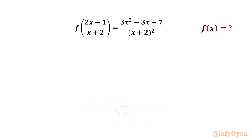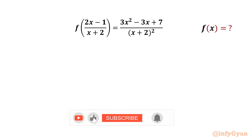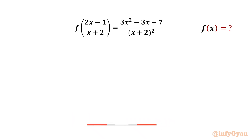Hello my dear friends. Welcome back to Infigian. In this video we are going to solve one functional equation problem. Here we have to evaluate function f of x, if f of (2x minus 1) over (x plus 2) equals (3x squared minus 3x plus 7) over (x plus 2) whole squared.